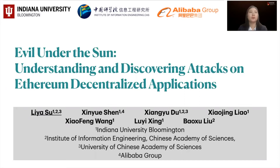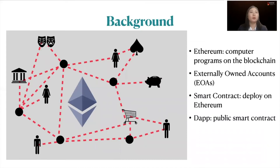First, I'd like to introduce the background of Ethereum. Ethereum is a public blockchain-based distributed computing platform — like computer programs on the blockchain. On Ethereum, there are two types of accounts: externally owned accounts, called EOAs, controlled by private keys, and contract accounts controlled by code, known as smart contracts.